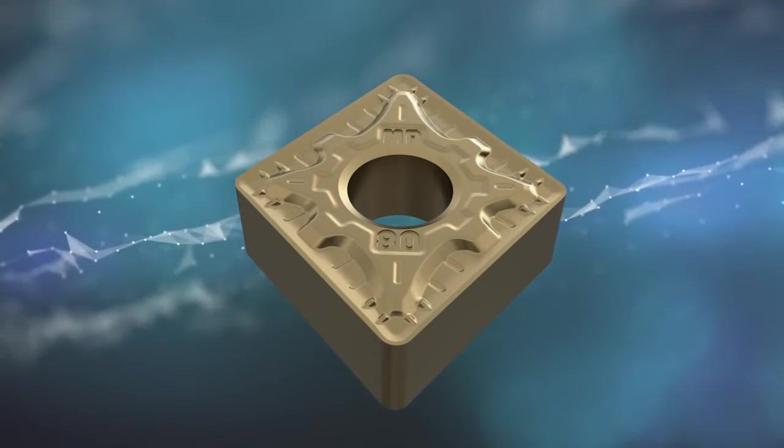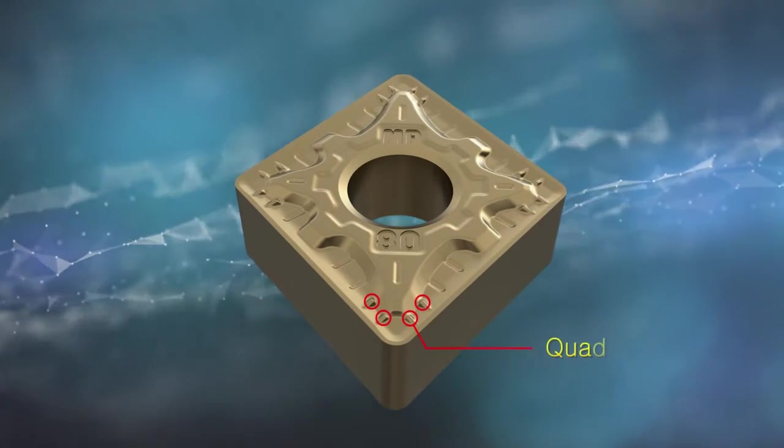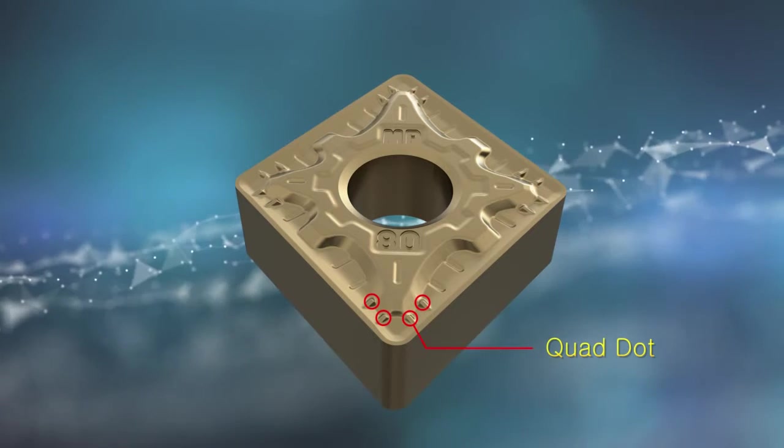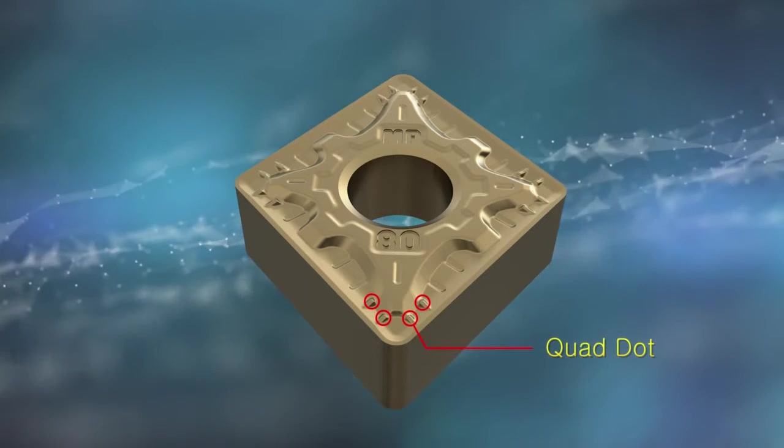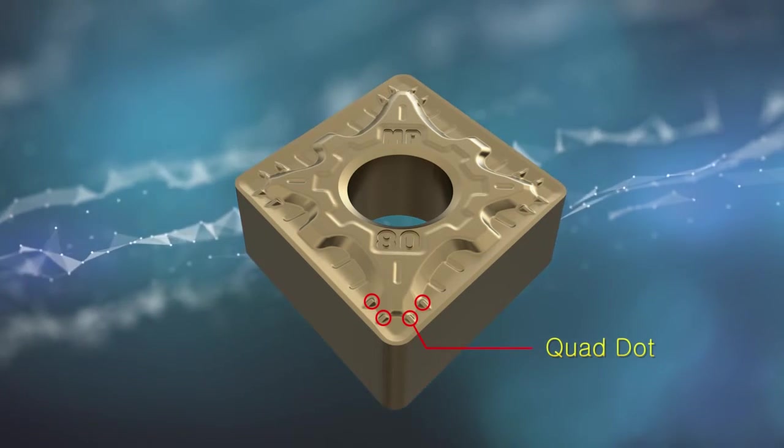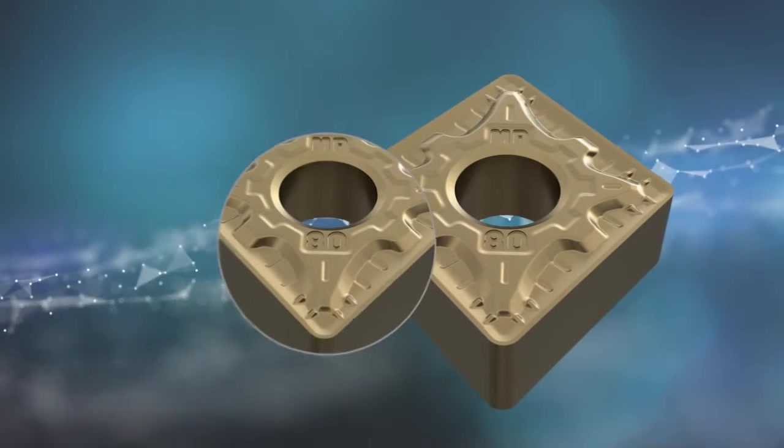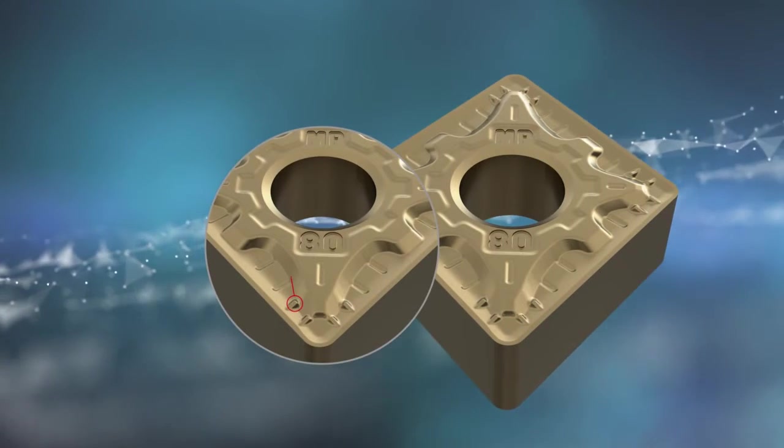The new MP chip breaker is for cutting medium alloy steel with Coraloy Quad-Dot. It evacuates chips efficiently and the design of relief areas within the flat zone enables high-feed for improving productivity.